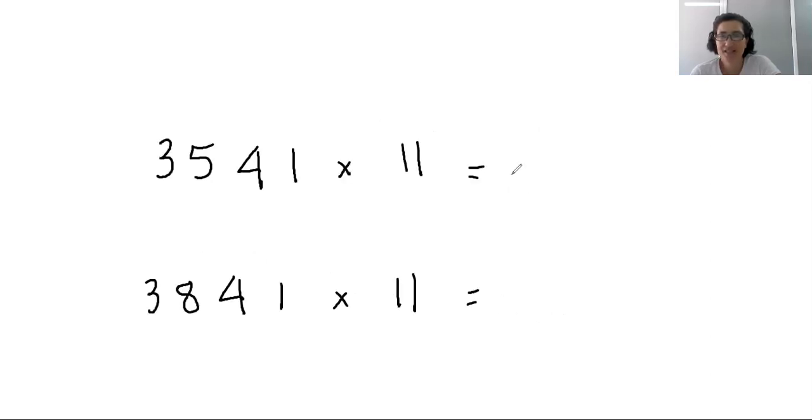Let's see if we can do the same procedure with a four digit number. We have 3 for the first digit. 3 plus 5 make 8. And then 5 plus 4 make 9. 4 plus 1 make 5. And the last digit is 1. So 3541 times 11 makes 38951.